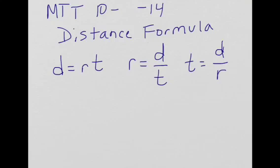Open up your MTT section and date it. The title of this MTT is Distance Formula. There's three different forms of the distance formula. D equals RT, which is also an easy way to remember that is dirt, D-I-R-T. And then R equals D divided by T, and T equals D divided by R.